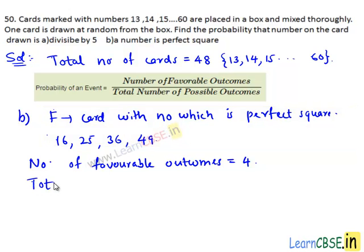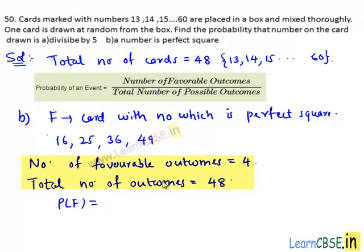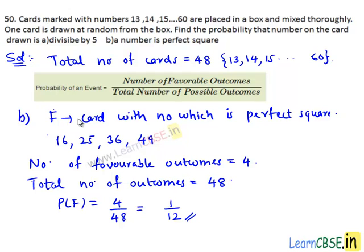Total number of outcomes equals total number of cards, that is 48. Then P(F) equals 4 divided by 48. Here 4 is a common factor of both numerator and denominator; 4 goes into 4 one time and 4 goes into 48 twelve times. Hence, the probability of getting a card with a number that is a perfect square is 1/12.